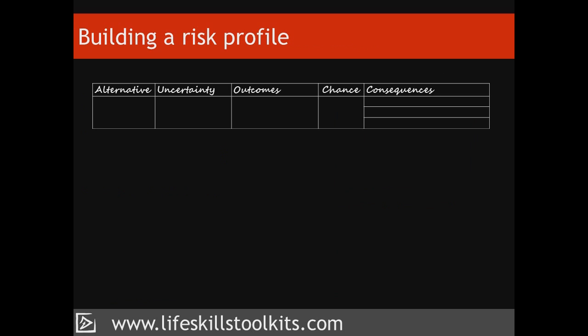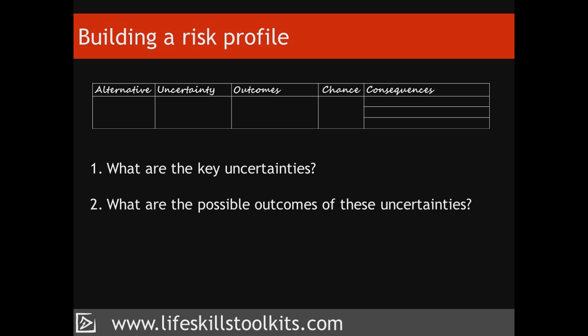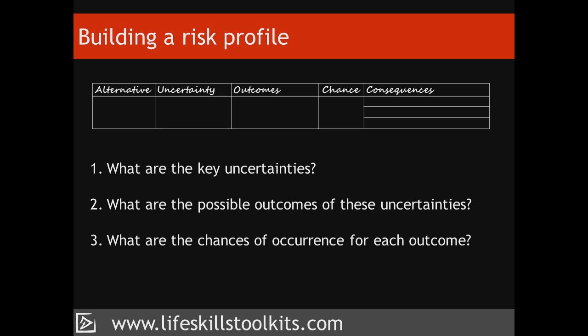A risk profile captures the way uncertainty affects one or more of the alternatives on which our decision is based. It's built using answers to these four questions: What are the key uncertainties? What are the possible outcomes of these uncertainties? What are the chances of occurrence for each outcome? And what are the consequences of each outcome?